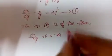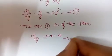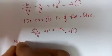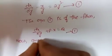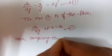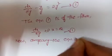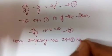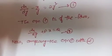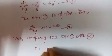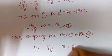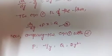Now comparing equation 1 with the standard form dx/dy + P·x = Q, we get P = −1/y and Q = 2y².